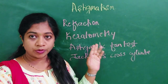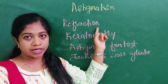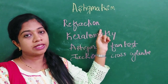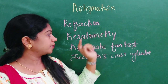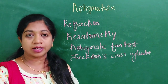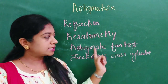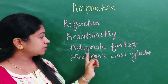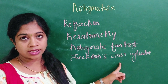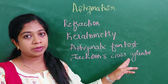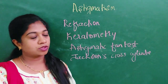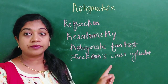What tests are done for astigmatism? First, do both dry and wet refraction to find the exact power in each meridian. Then keratometry or corneal topography to assess corneal curvature abnormalities. The astigmatic fan test — which needs a separate video — is also done. And the Jackson's cross cylinder, for which there is a separate video in the playlist linked in the description.